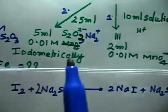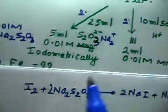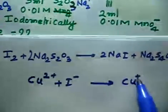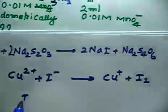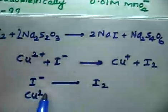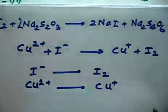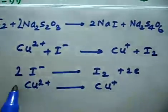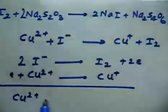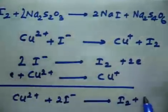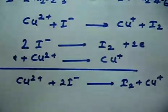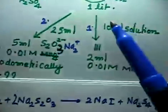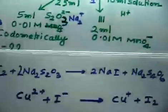You have Cu²⁺ in solution. If I treat Cu²⁺ with I⁻, you will get Cu⁺ and I₂. I⁻ gets oxidized to I₂ and Cu²⁺ gets reduced to Cu⁺. Only Cu²⁺ reacts with I⁻ — Fe²⁺ does not get reduced in the presence of I⁻. Balancing: this side has 2 electrons, this side 1, so multiply by 2 to get: 2Cu²⁺ + 4I⁻ → I₂ + 2Cu⁺. In iodometric titration, the solution is first treated with excess I⁻ and the iodine liberated is titrated with Na₂S₂O₃.